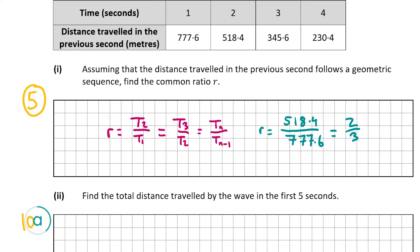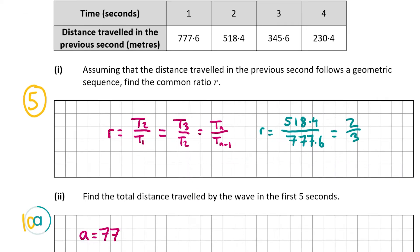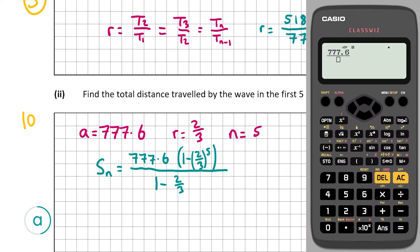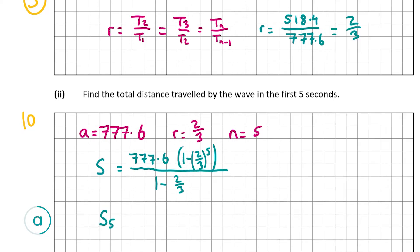Our first term a is 777.6, the common ratio r is 2 over 3, and n is 5 for the first 5 terms. Substituting into the formula gives us 777.6 times (1 minus (2/3) to the power of 5), all over (1 minus 2/3). Putting that into the calculator gives us 2025.6 meters. So the wave traveled 2025.6 meters in the first 5 seconds.